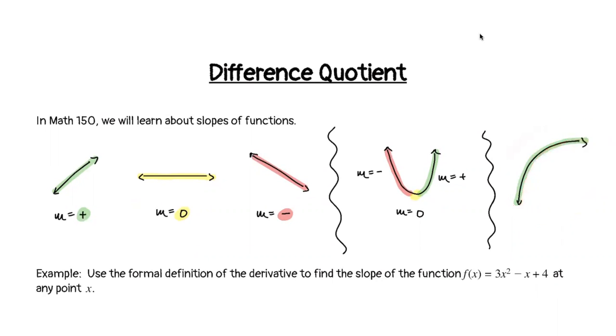If we think about just the slope of the log graph, it is positive, positive, positive — less positive, less positive, less positive — but it never actually gets to zero.